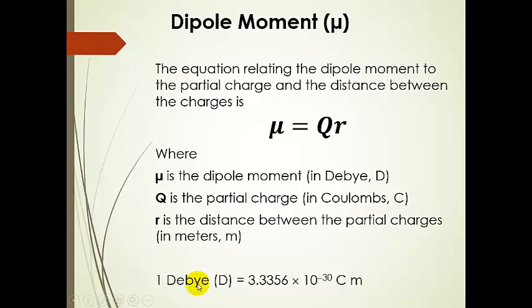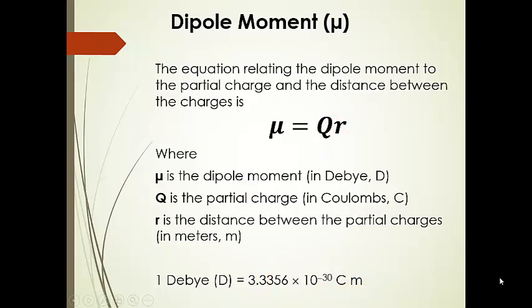The conversion for Debyes is: one Debye equals 3.3356 × 10⁻³⁰ Coulomb·meters. So our distance between the two partial charges is in meters and our charge is in Coulombs, which allows us to cancel units and solve for whatever we need.